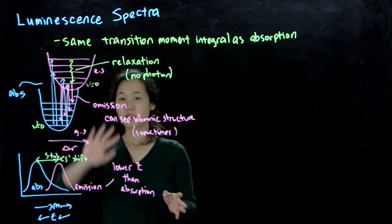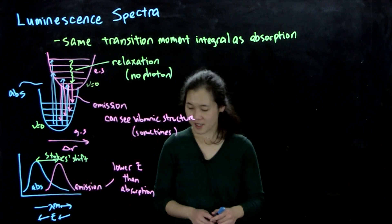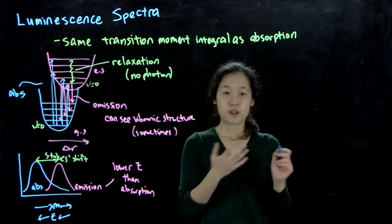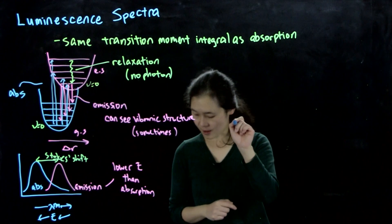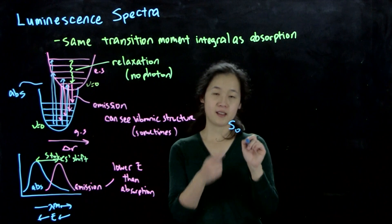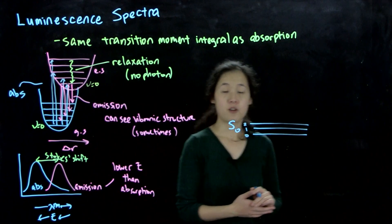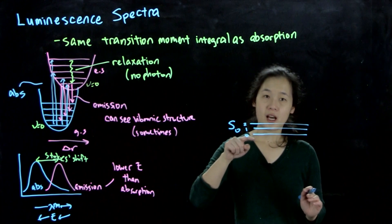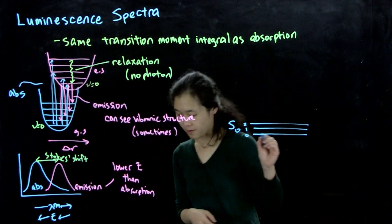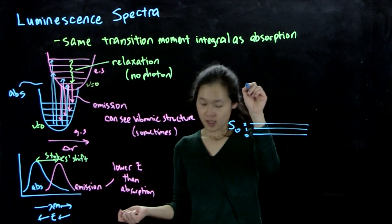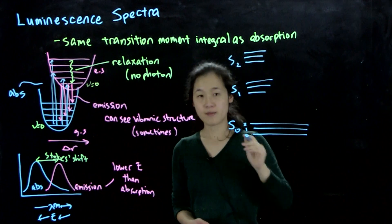This is the general scheme of luminescence. You may have heard about the difference between fluorescence and phosphorescence. We'll redraw this as what's called the Jablonski diagram, where instead of using curves we use flat lines — the curves are assumed. If we have a singlet ground state, here is S-sub-zero with its vibrational levels zero, one, and two. At low temperature we'll all be at the zero state. We have spin-allowed transitions to singlet excited states — here's S1 and S2.